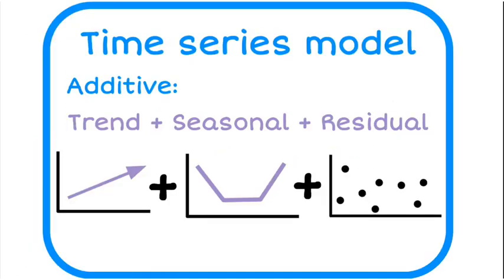There are two main types of models and the one we usually focus on is called the additive model. The additive model means I am adding the components together. We've got a trend component and a seasonal component.